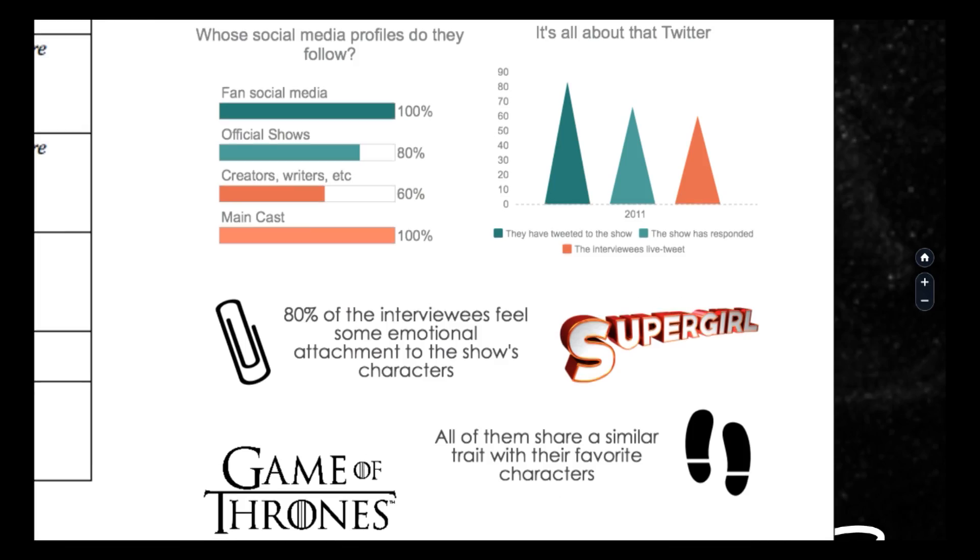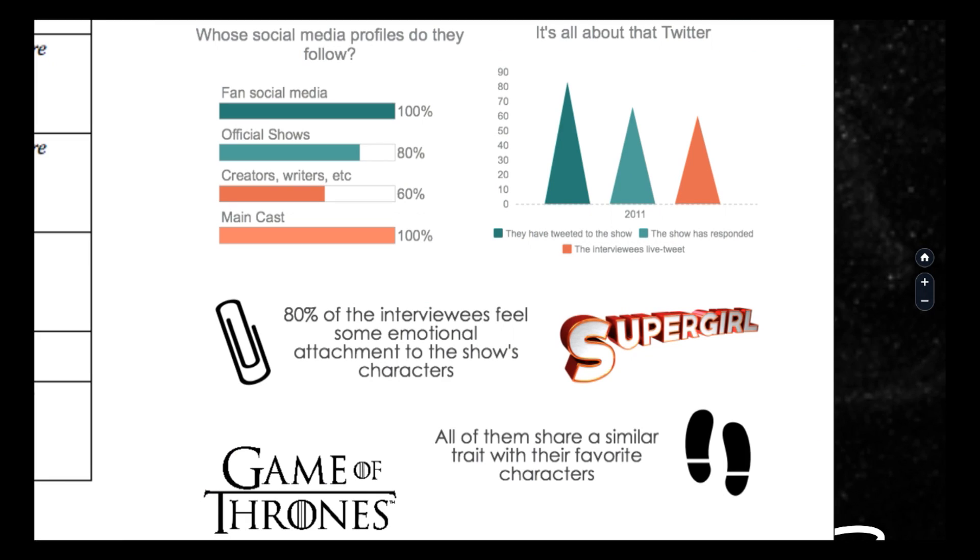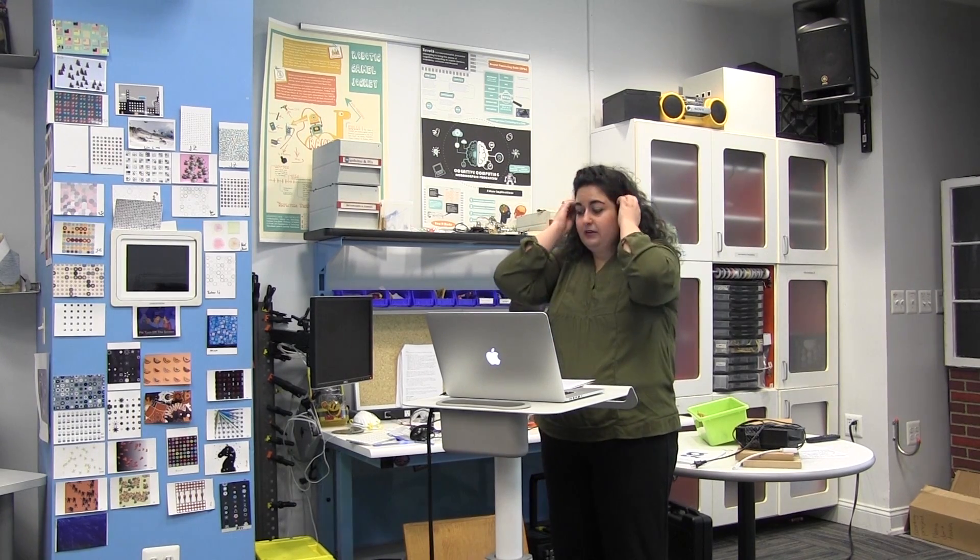Everyone else follows all the main cast members and other fan social media, be it a Twitter parody or a fan Instagram account, Tumblr, things like that. Twitter, Tumblr and Instagram were the biggest forms of social media people would follow. And then most of them would follow the official television show's social media. And then 60% of them would get into the writers, the executive producers, the directors, things like that. But all of them followed the main cast and other fandoms.